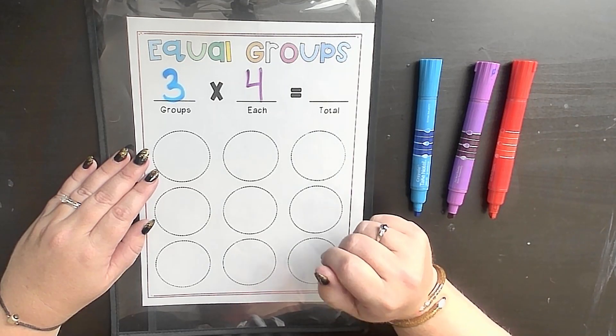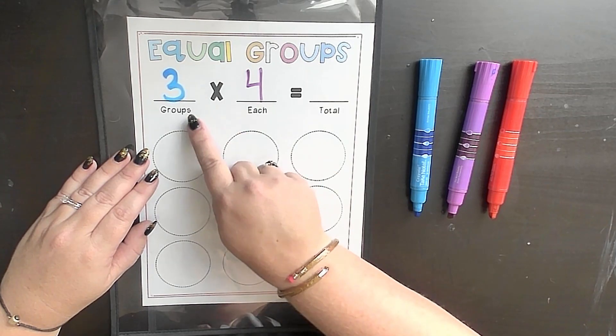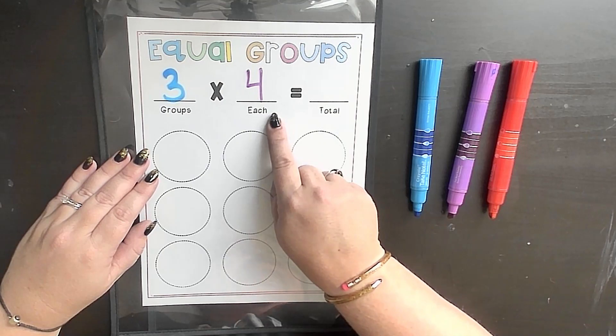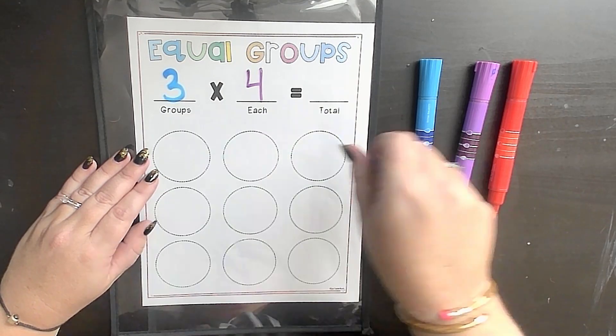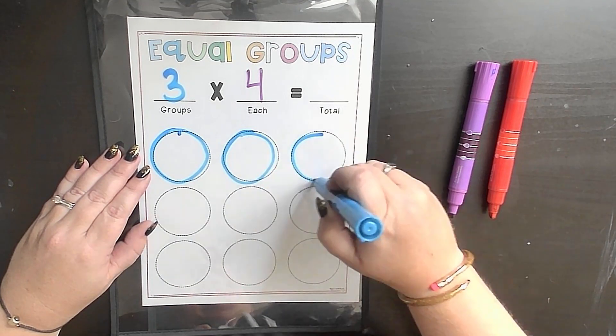First step is getting our factors. Today we have 3 times 4, or as we like to say, 3 groups with 4 in each. Let's use this model. First, I'm going to start those 3 groups, making a 1 and a 2 and a 3 for our groups.